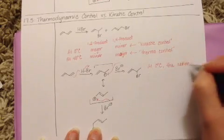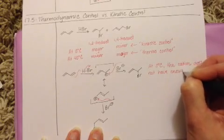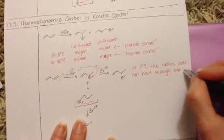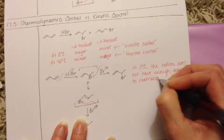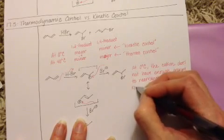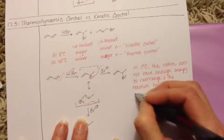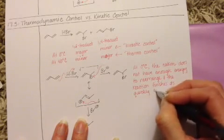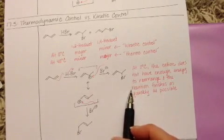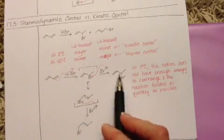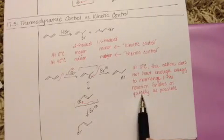So, we're going to say at zero degrees C, the cation does not have enough energy to rearrange. And the reaction finishes as quickly as possible. And because this process is all about just getting the reaction over with as quick as you can, there's not a lot of energy in the system, just got to make it happen quickly, then we say that it's under kinetic control because kinetics, if you remember from GenChem, has to do with the rate of the reaction and how fast it proceeds.